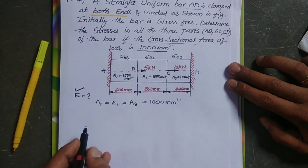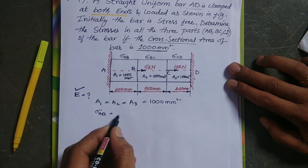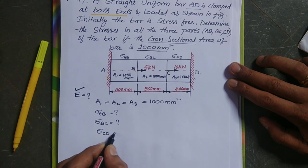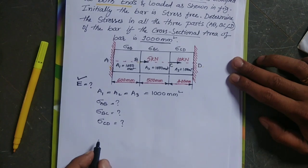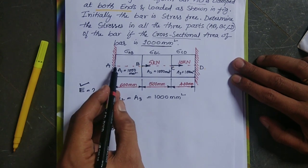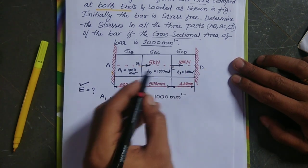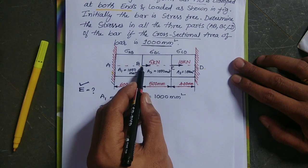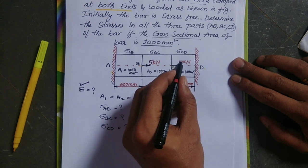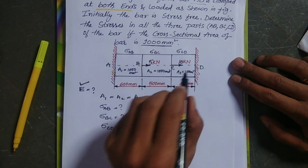So the given data is: A1 = A2 = A3 = 1000 mm². We need to calculate the stress at AB, the stress at BC, and the stress at CD. Looking at the given figure, the bar is rigidly fixed at both ends A and D, and two forces are acting — 5 kilo-newton at B and 10 kilo-newton at C.